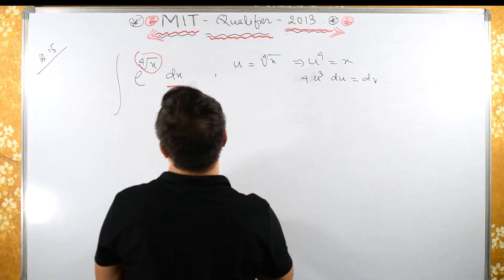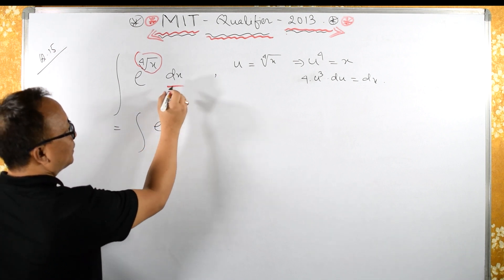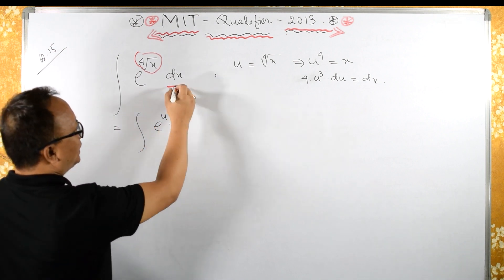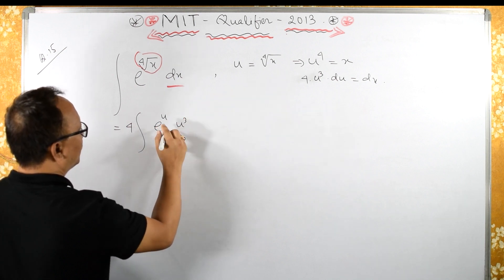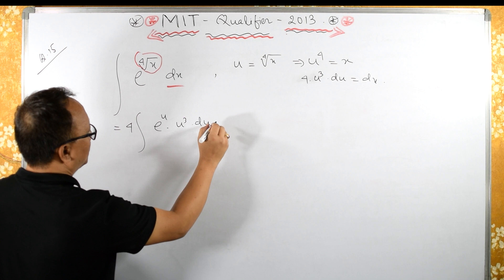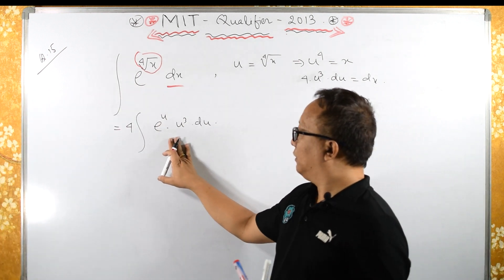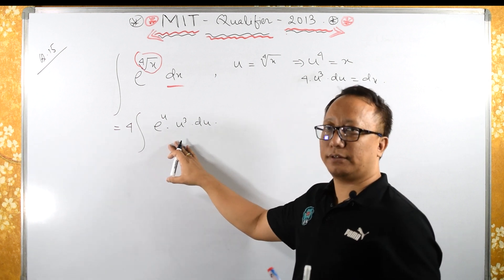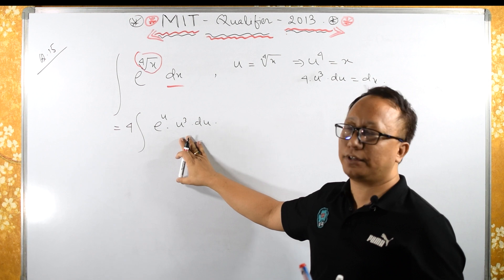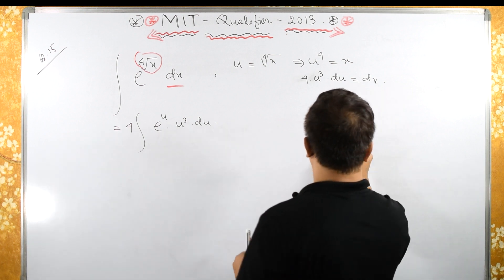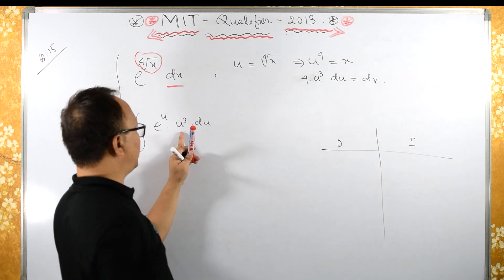So we have dx, and this integral becomes 4 times the integral of e raised to u times u cubed du. Now for this integral, if I use integration by parts, we need more steps, so let's use the tabular method, or DI method.